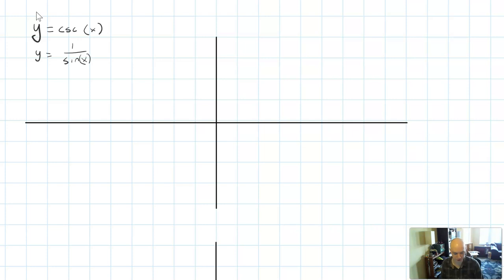Because this is a reciprocal function, a number of things are gonna happen. When sine x is zero, cosecant x is gonna be undefined. It's gonna have a vertical asymptote.